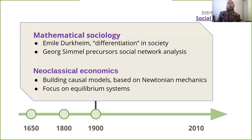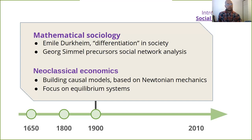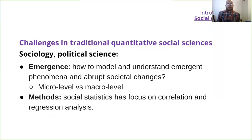The difference between economics and mathematical sociology is basically that economics was trying to build causal models, with the idealized nature of Newtonian mechanics at the basis, focused on equilibrium systems.